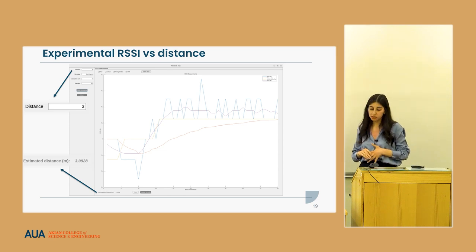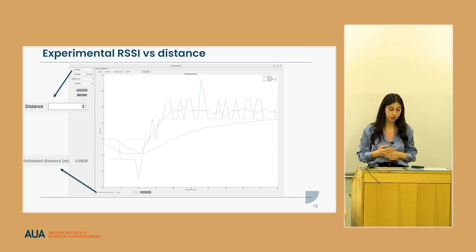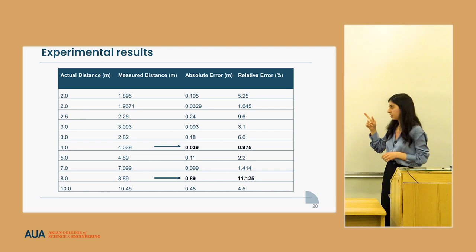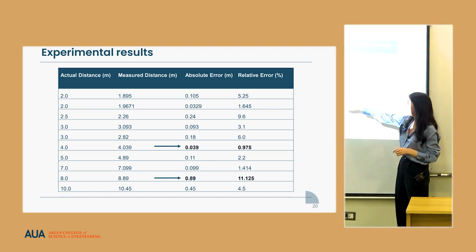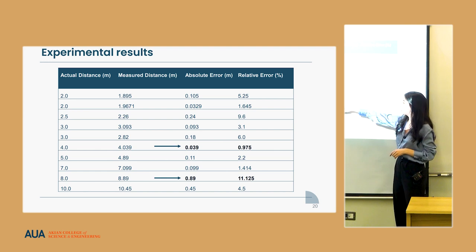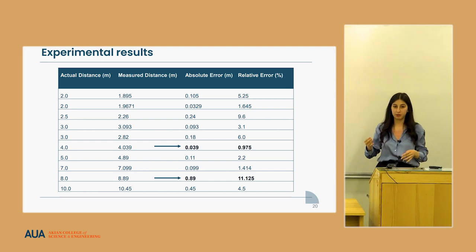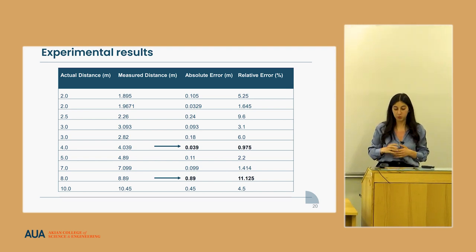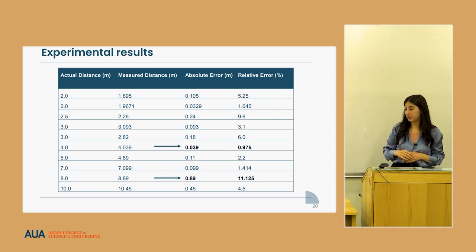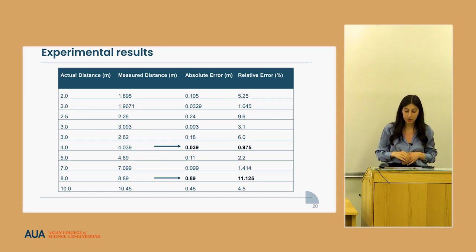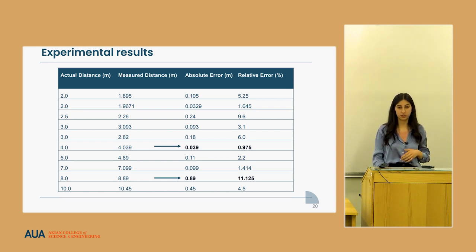For experimental results, we tested from 0 to 13 meters; the operational range can be improved with antenna and hardware changes. The minimum absolute error we achieved was 0.04 meters — at 4 meters distance we had 4 centimeters offset, approximately 1% error. The highest error was at 8 meters, which is a longer range for this scenario, where we had 90 centimeters of offset.